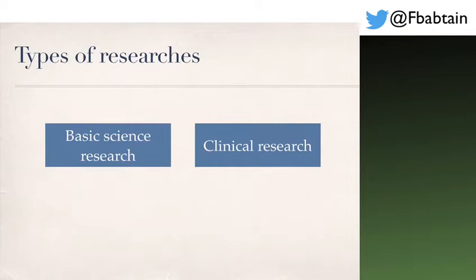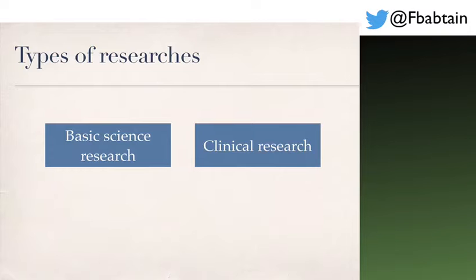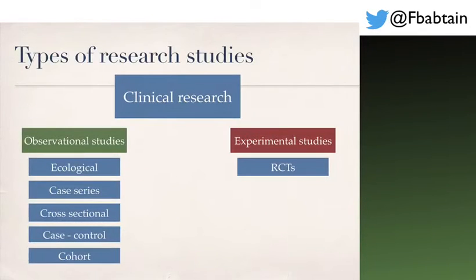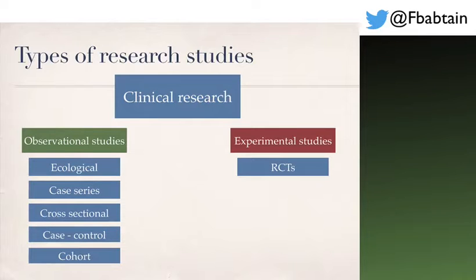Types of research can be basic science research or clinical research. Basic science research deals with basic science, while clinical research is what clinicians do — dealing with patients, diagnosis, or therapy. Clinical research can be either observational studies, where you observe a population without controlling them, or experimental studies, where you expose a group to an exposure variable and observe the outcome.